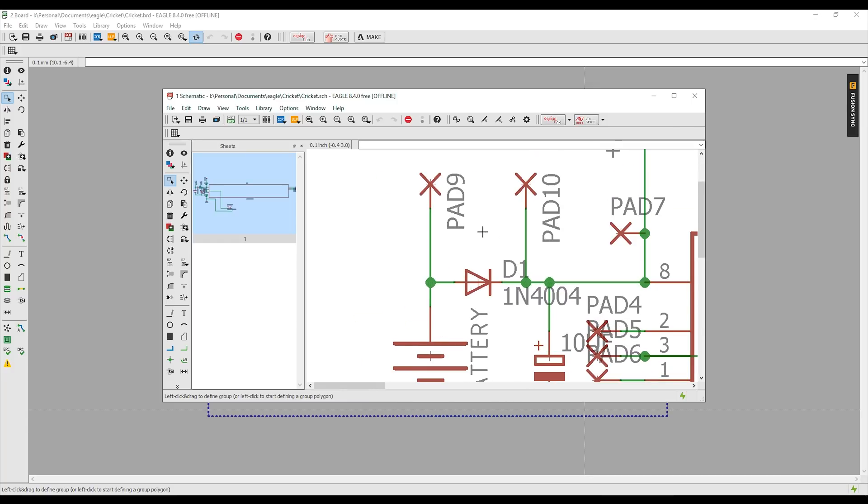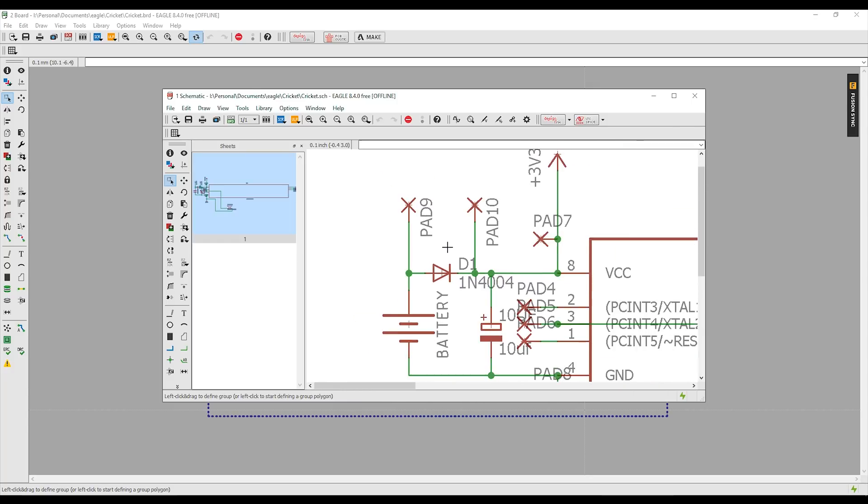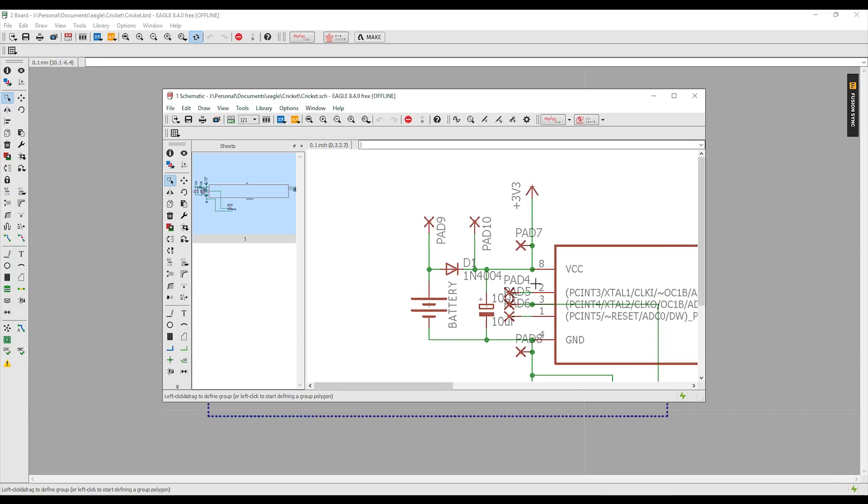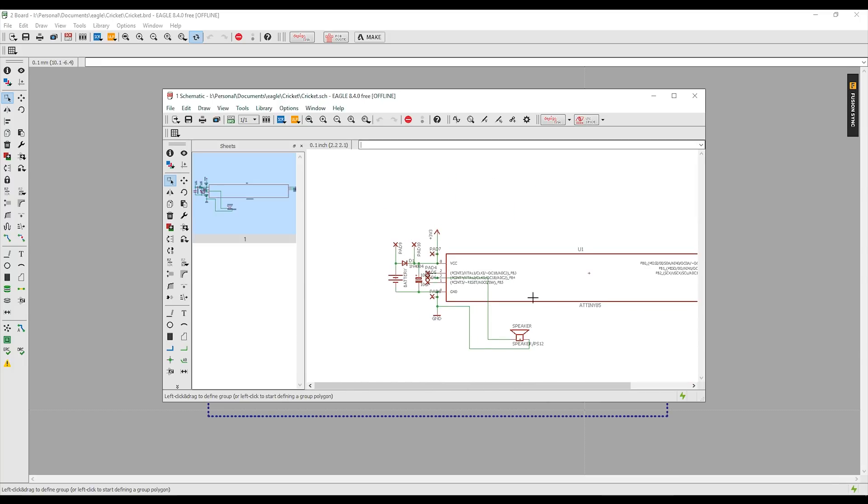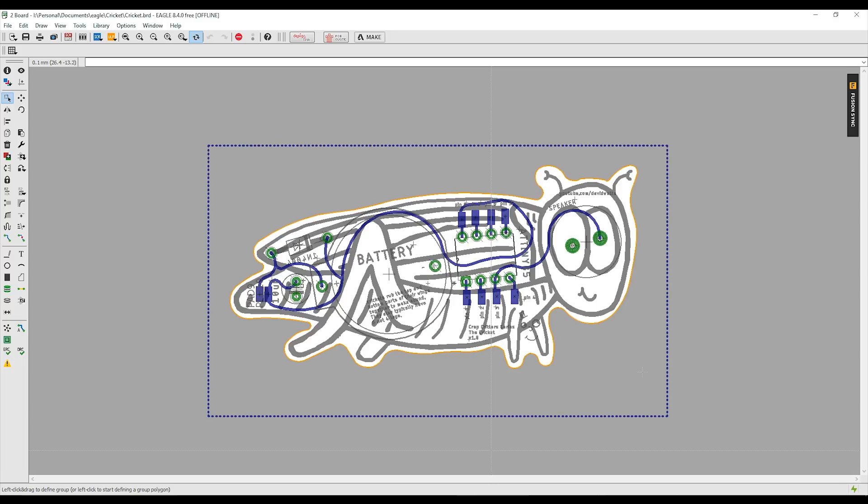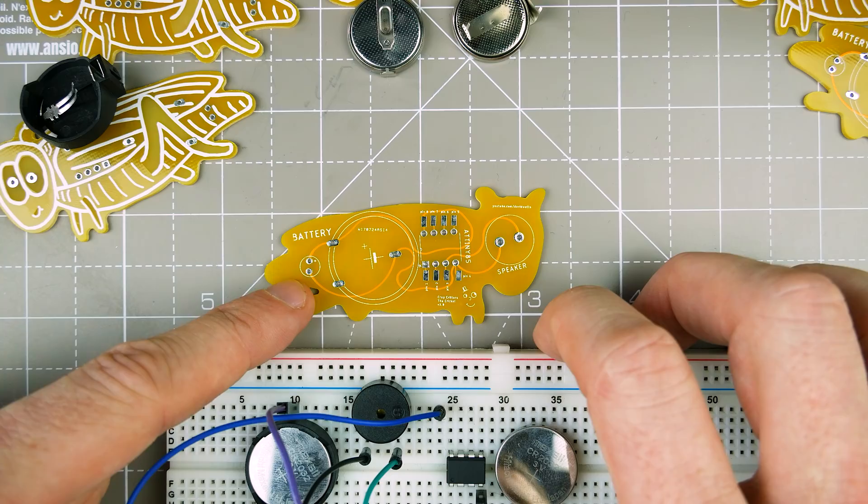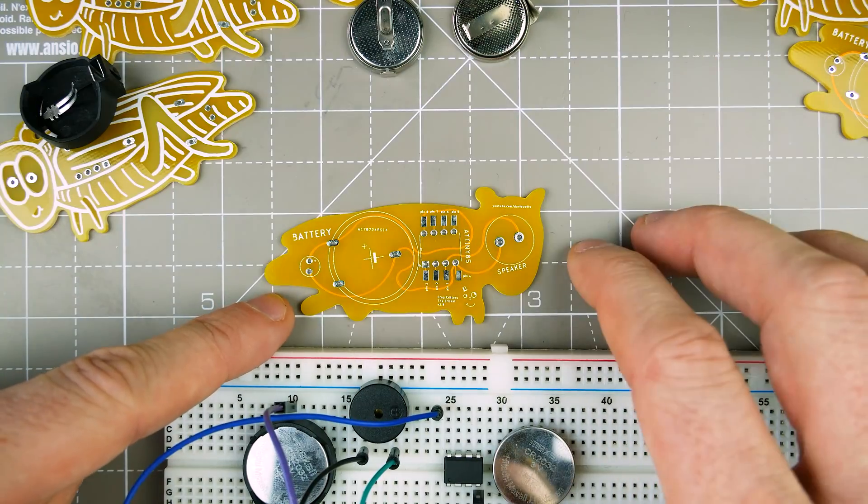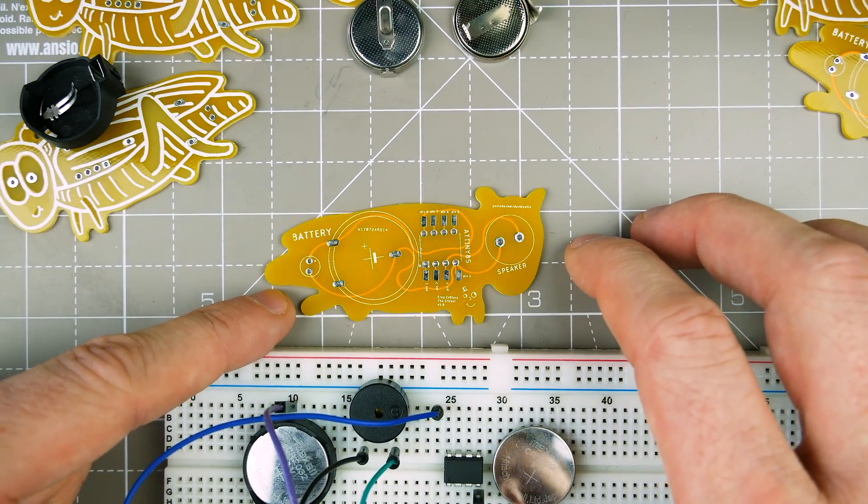At lower current draw you're looking at a lower drop, so probably 0.5 volts probably. If you've got two of these in series that's like six volts and you want to drop a bit because the ATtiny85 can only really handle 5.5 volts or six depending on what datasheet you read, but you want to err on the side of caution really.